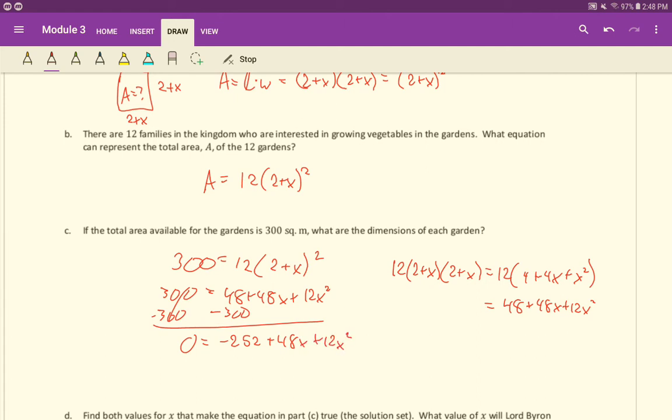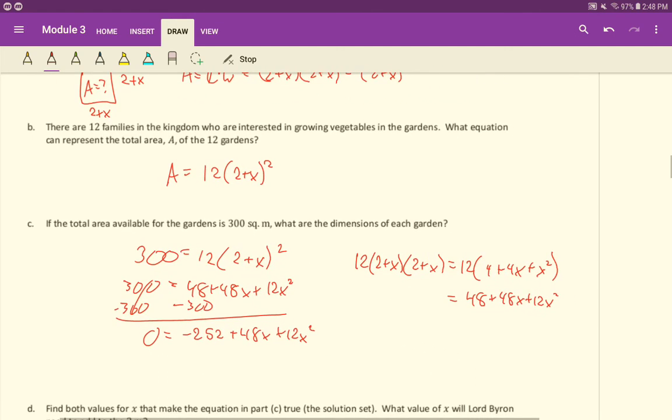And we get zero equals -252 + 48x + 12x². And then you could try and factor that. You would want to maybe factor out a GCF here and then look for numbers - you'd probably use the AC method or something like that. And that would be kind of tricky to do, right? Big numbers, kind of hard here. The 252 would divide, so you could divide 12 out here.